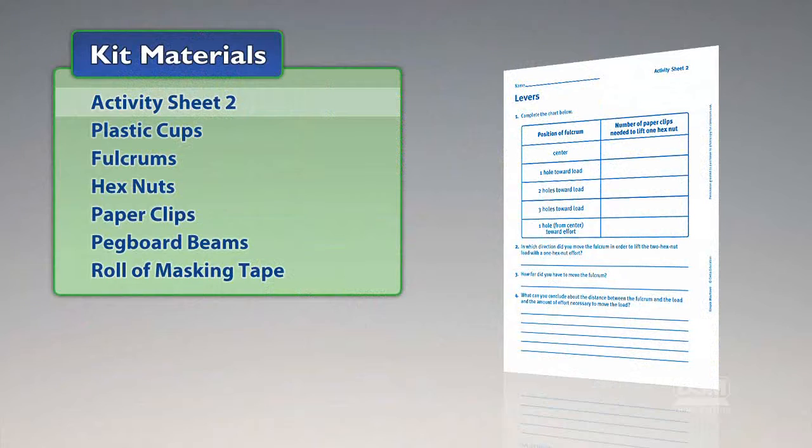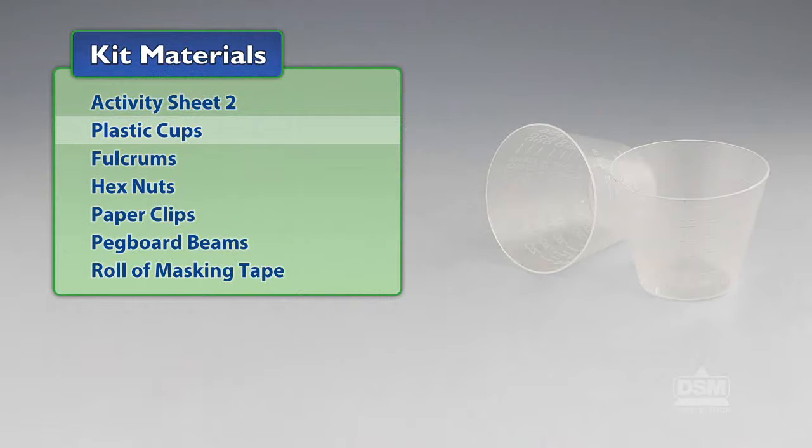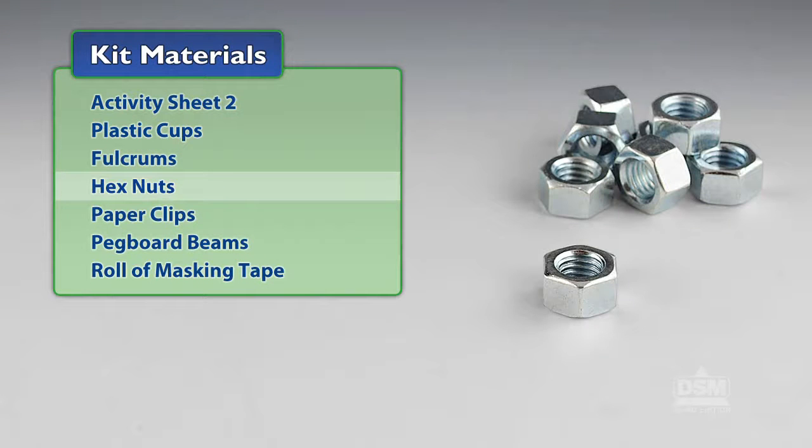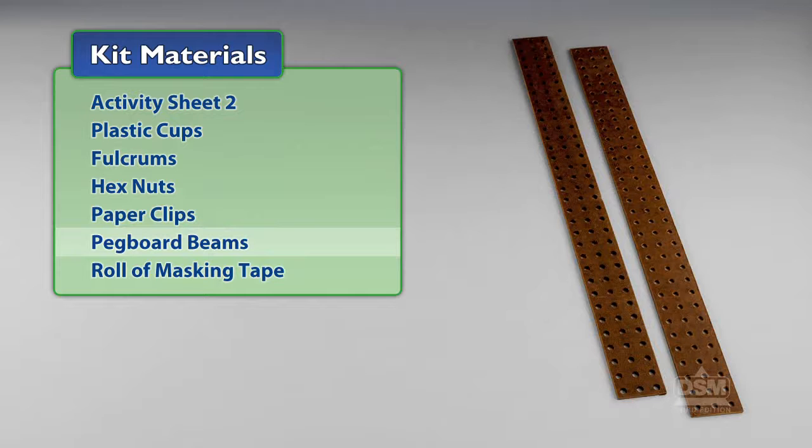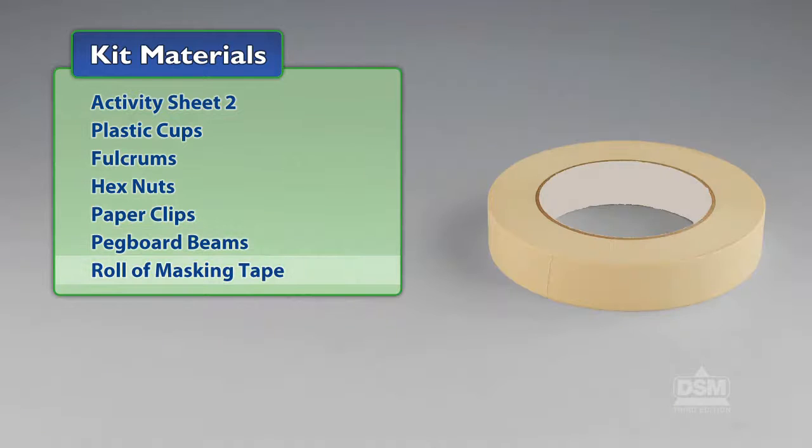You will need the following materials from the kit: Activity Sheet 2, plastic cups, fulcrums, hex nuts, paper clips, pegboard beams, and a roll of masking tape. You will also need to provide pencils.